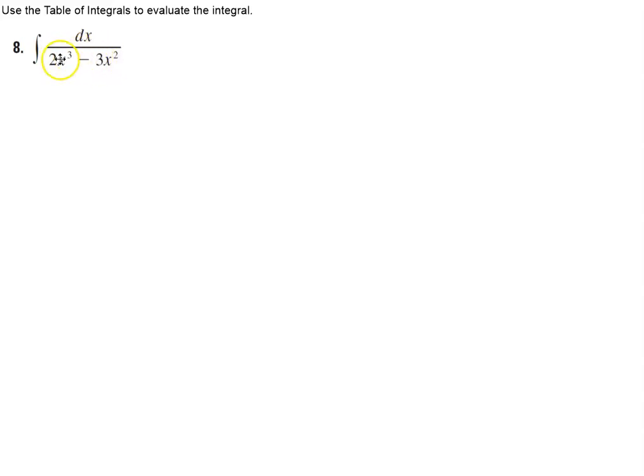So if you look in the denominator, is there something that we can factor out? Well, we can. We can factor out the x squared. So let's go ahead and rewrite this. So we're going to have 1 over, factor out the x squared, and we have 2x minus 3, and that's times dx.